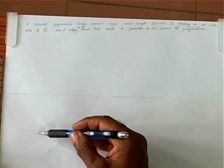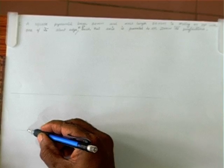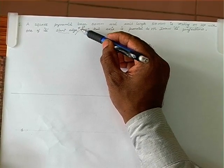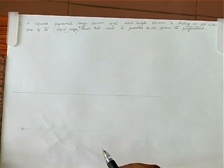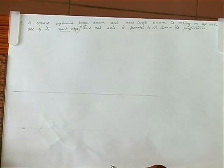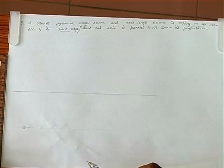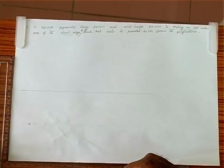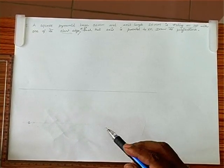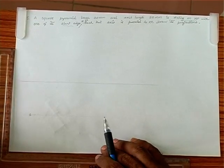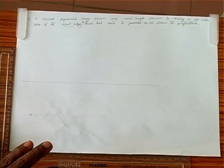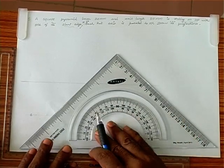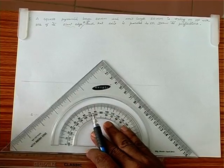The first condition: a slant edge is on HP. A slant edge has only two points — we need one base point and one vertex. Therefore, we have to position the square pyramid in corner position. Corner position goes like this — we need to draw a 45-degree line here.